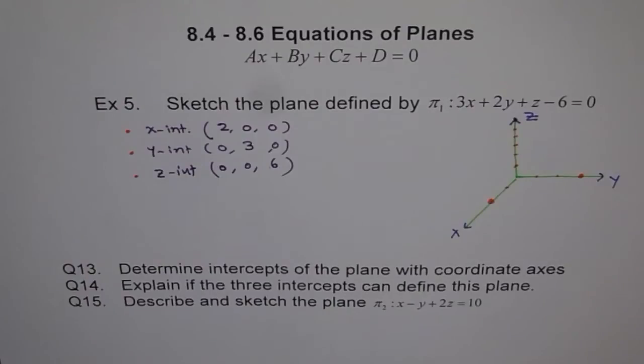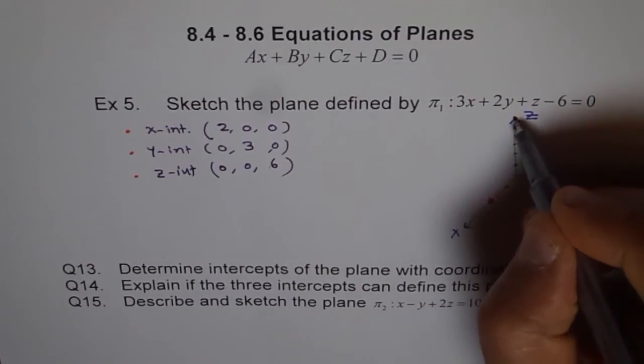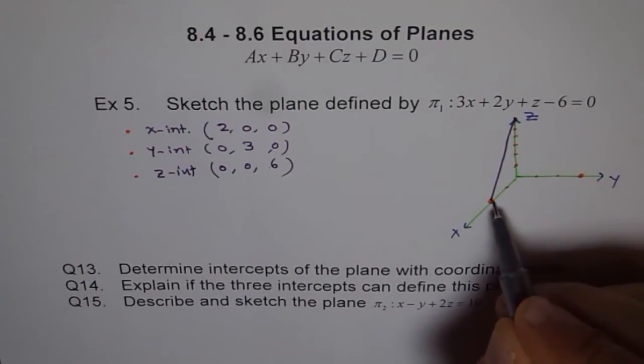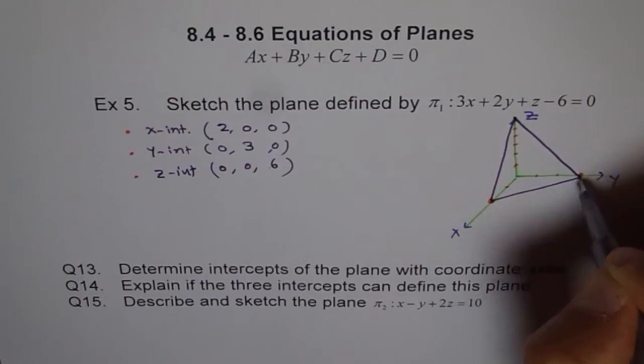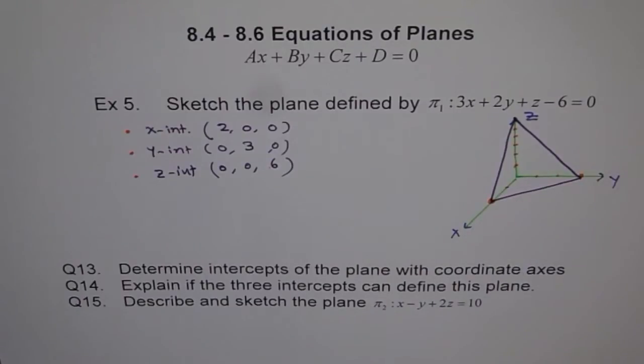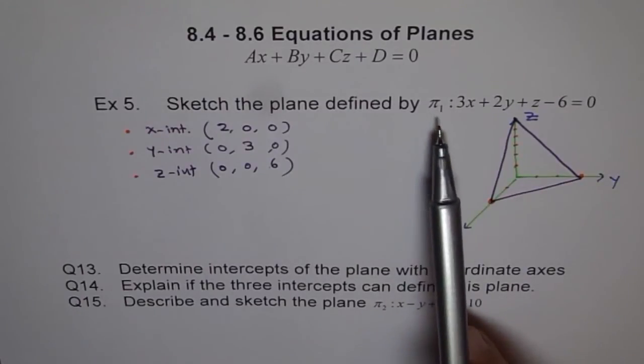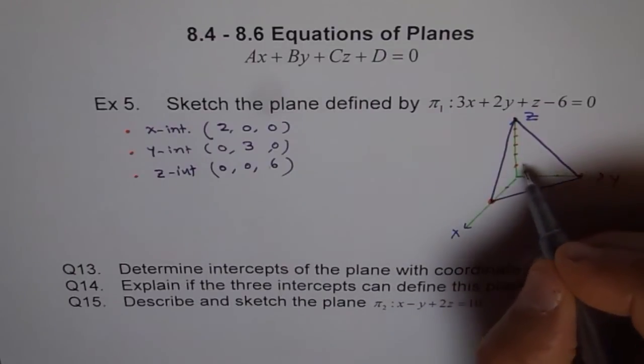So, that is what we get our 3 points. And if we join these 3 points, we get our plane. So, let's do it. So, we join these points, 1, 2, 3. And that's the plane which defines pi 1. So, that's our plane pi 1.